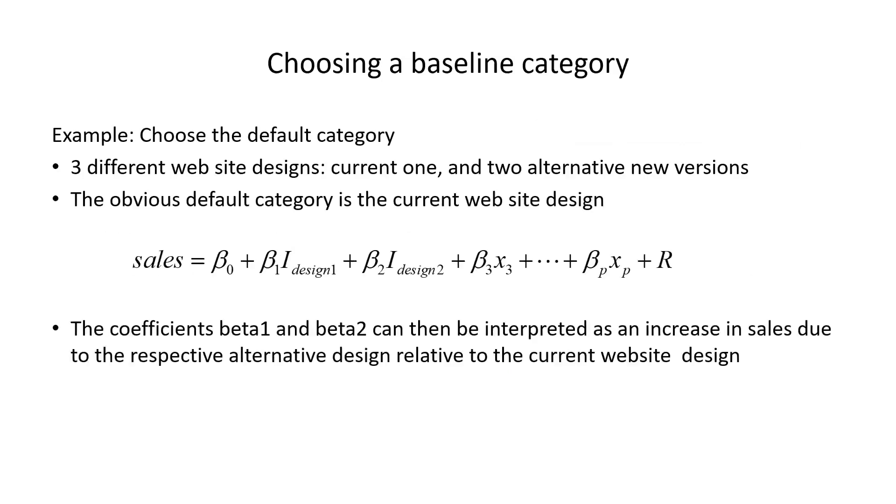So, choose the default category—the obvious default. That is the case when we look at three different website designs: the current one and two alternative new versions.